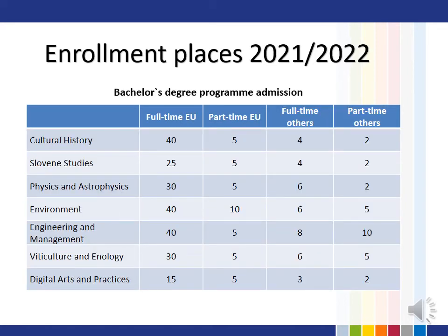I will now present the enrollment places in the undergraduate and postgraduate programs of the University of Novogorica. At the University of Novogorica, we offer seven undergraduate study programs. Cultural History, Slovene Studies, Physics, and Astrophysics and the Environment are three-year university study programs requiring the general matura or vocational matura plus an additional matura course. Engineering and Management and Viticulture and Enology are three-year higher professional study programs requiring the general or vocational matura. Digital Arts and Practices is a three-year higher professional study program requiring the general or vocational matura plus an assessment of artistic ability. Enrollment conditions are detailed on the University of Novogorica website.